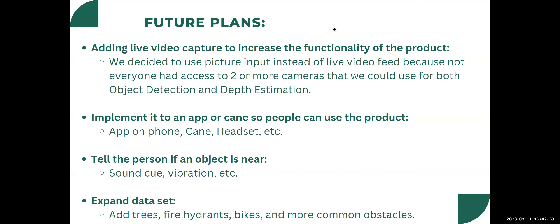For our future plans, we have several things. First is adding live video capture to increase the functionality of the product. We decided to use picture input instead of live video feed because not everyone has access to two or more cameras for both object detection and depth estimation. The second thing was to implement an app or a cane so people can actually use this to their advantage, because just having it on a website is not enough to go around the streets. Another future plan is to find a way for the person using the model to know what their AI is detecting, like sound cues or vibrations to alert any user of obstacles.